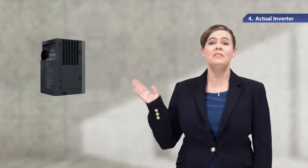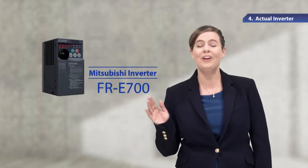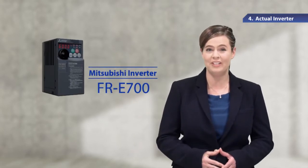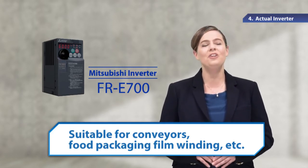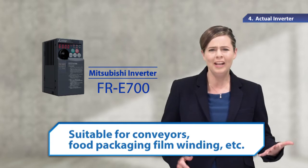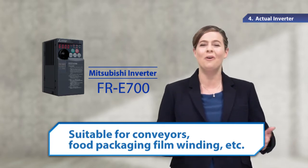In this chapter, we're going to use an actual inverter. This is the Mitsubishi General Purpose Inverter FRE700 series. This series has a lineup of highly functional, compact inverters that are used for conveyors, film winding machines for food packaging, and so on.